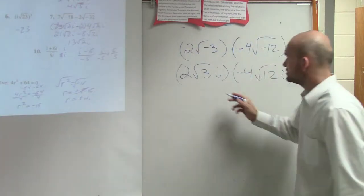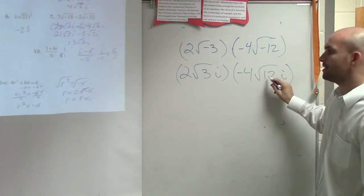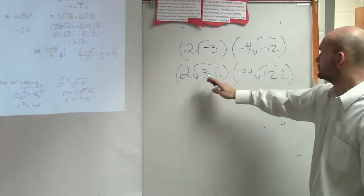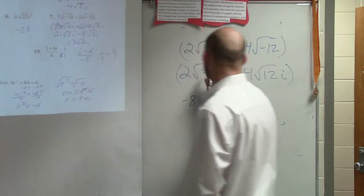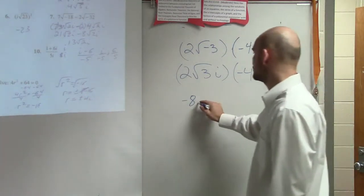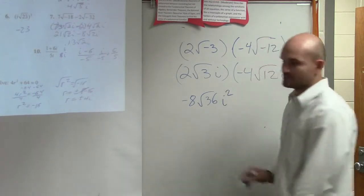Okay, so go ahead and finish this. Now I multiply across. First of all, can I multiply... So I can multiply 2 times negative 4, which is negative 8. Square root of 3 times square root of 12 is going to be the square root of 36. i times i is i squared.